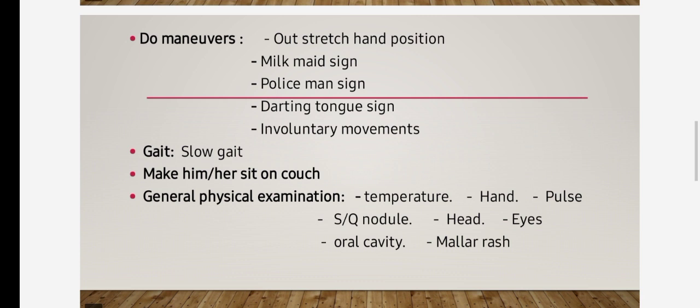Now command for gait. The patient would have slow and small stepping gait. Then make him sit. Start general physical examination. Start examination from hand for pallor, clubbing. Take temperature, pulse. Look for subcutaneous nodule near elbow and adjacent area.